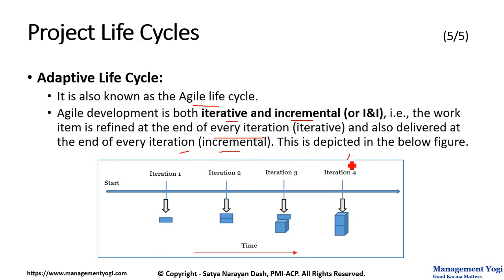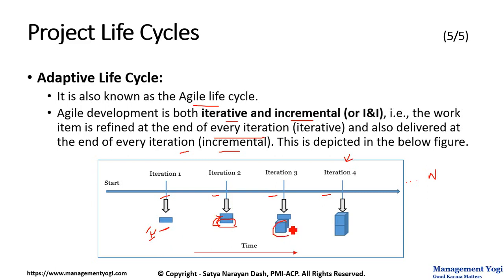This is depicted in the figure below. A project is divided into multiple iterations: Iteration 1, Iteration 2, Iteration 3, up to Iteration N. In the first iteration, you deliver one item or an increment. In the second iteration, you have another delivery on top of this increment — an additional one added on top. In the third iteration, you are again refining the product further and also giving another increment on top. Similarly, Iterations 4, 5, through N. So you are refining in every iteration and also delivering incrementally at the end of every iteration — that is why it is iterative as well as incremental, and the name is Adaptive or Agile Life Cycle.